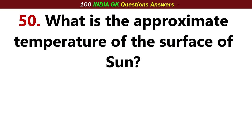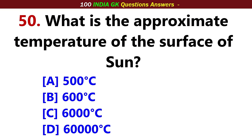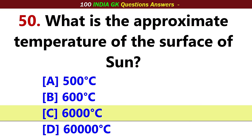What is the approximate temperature of the surface of the Sun? Answer, Option C: 6000 degrees Celsius.